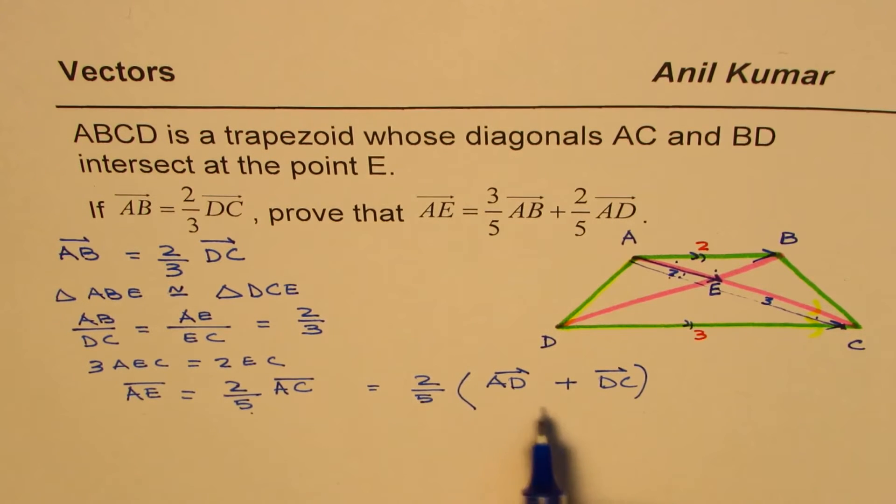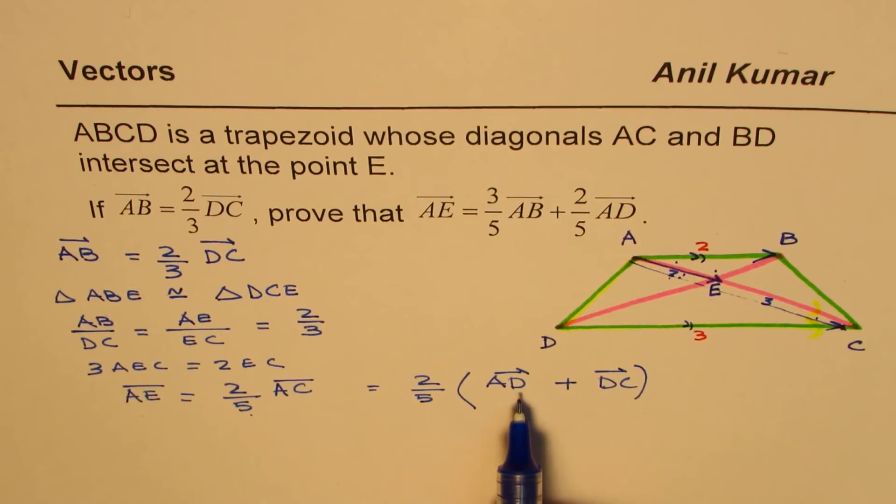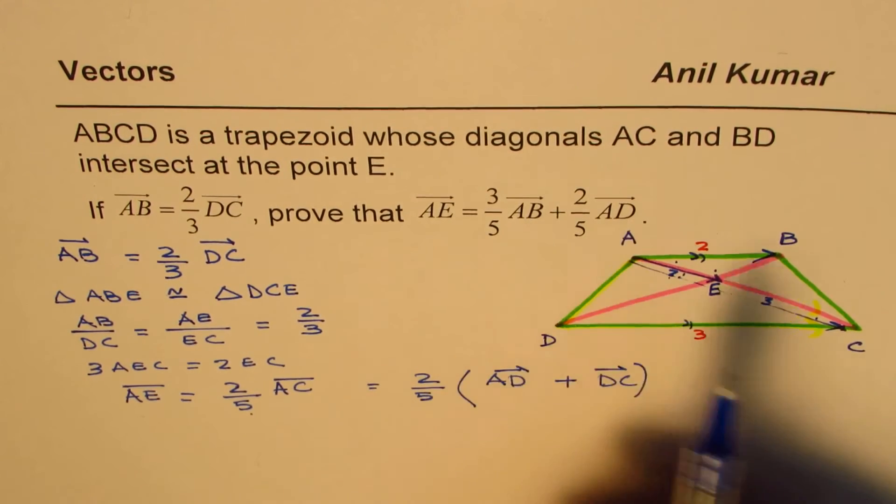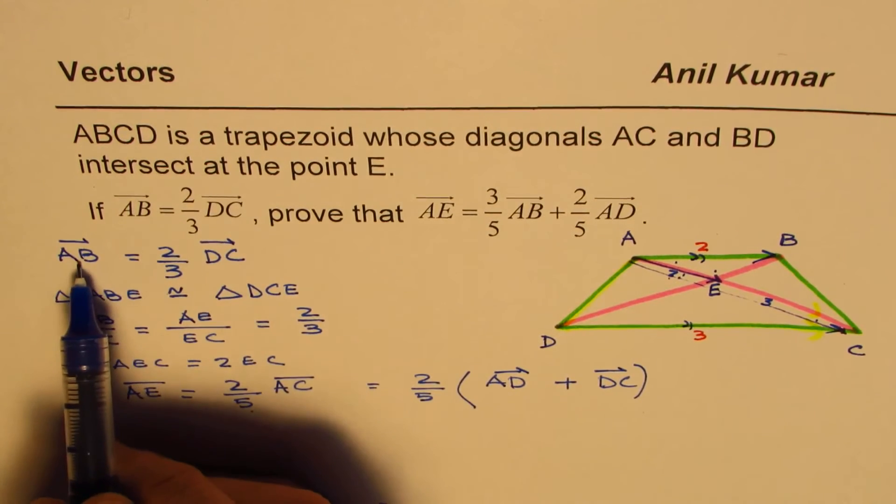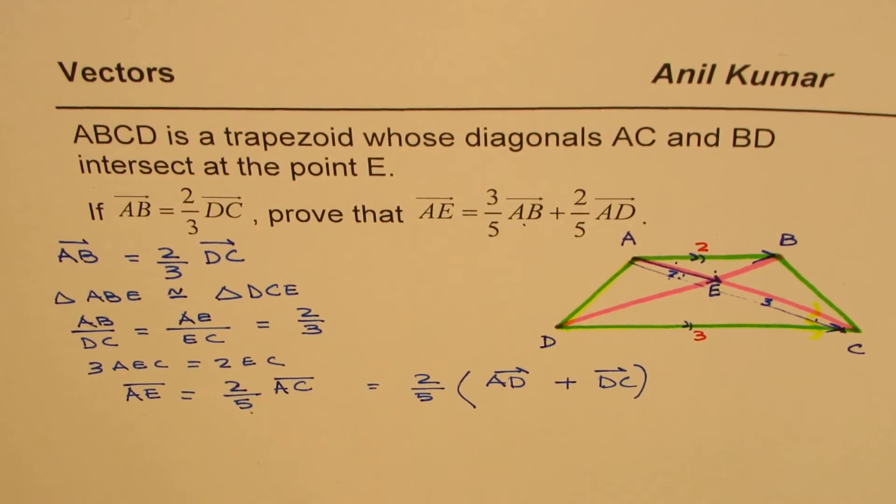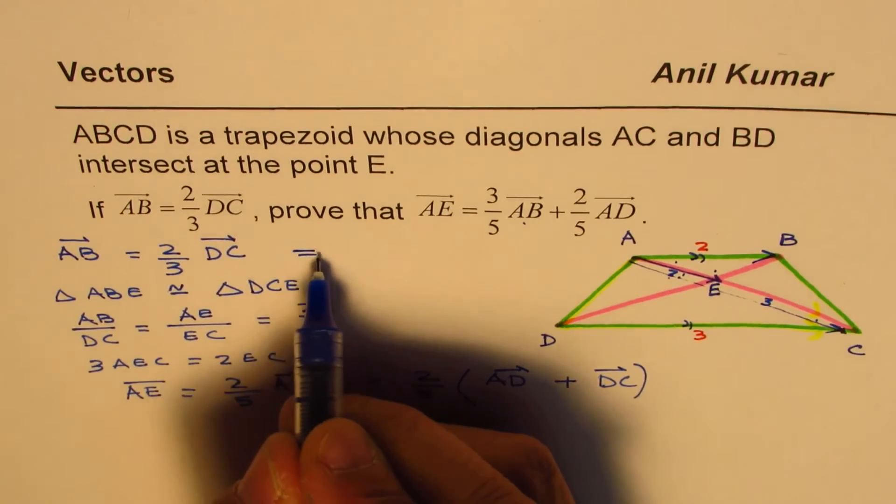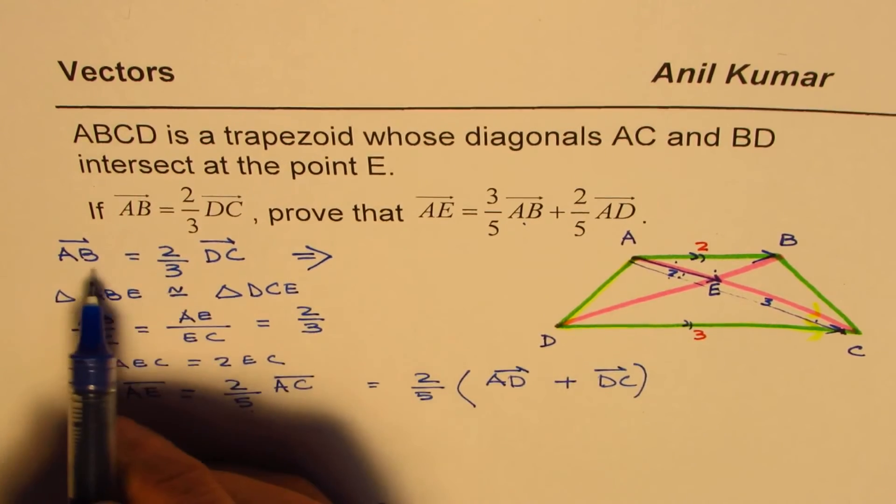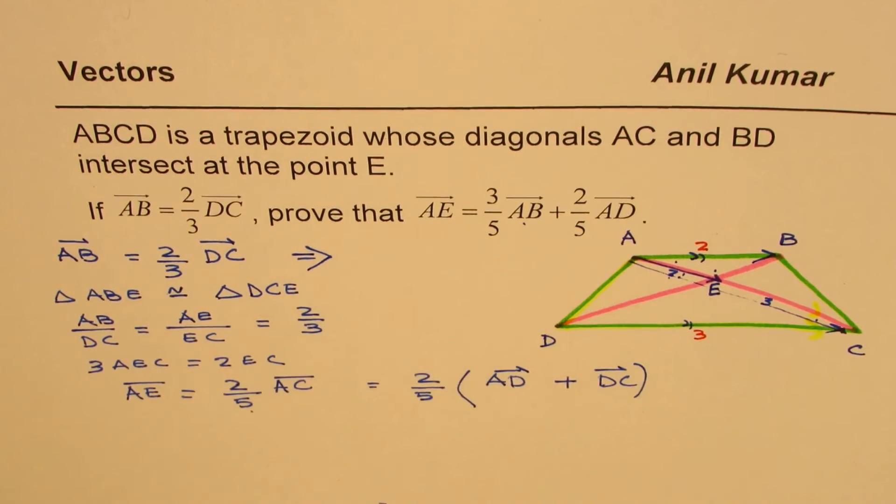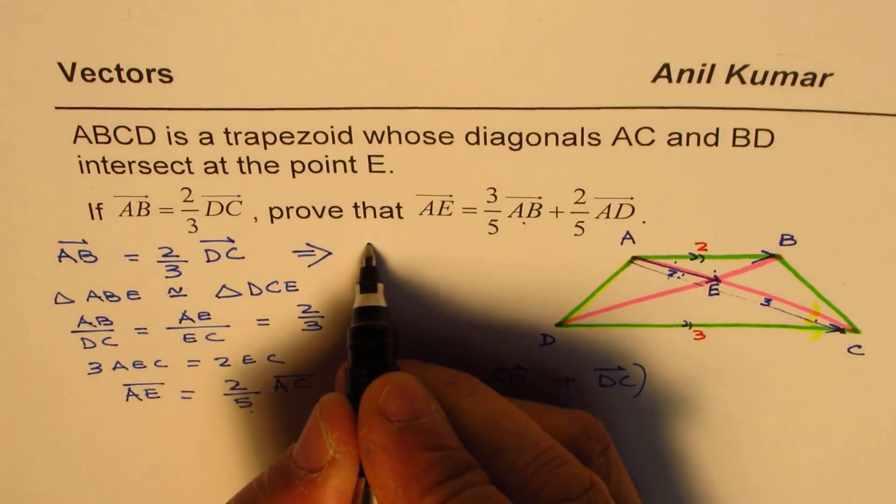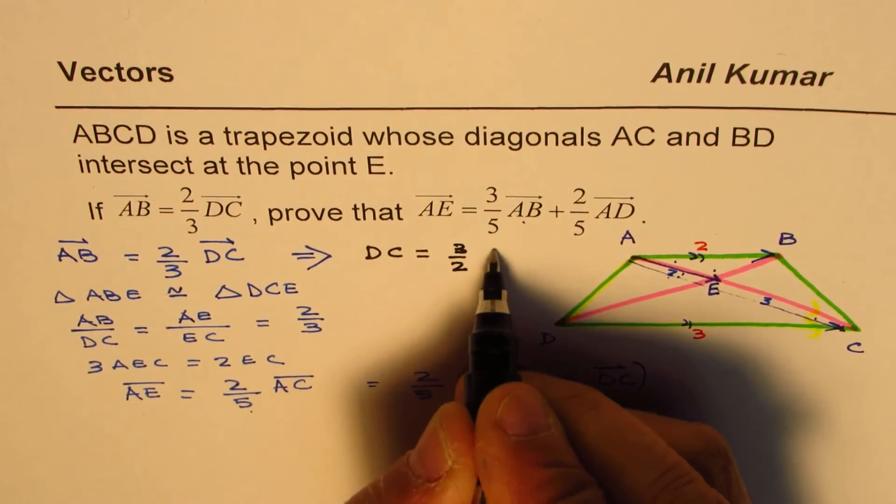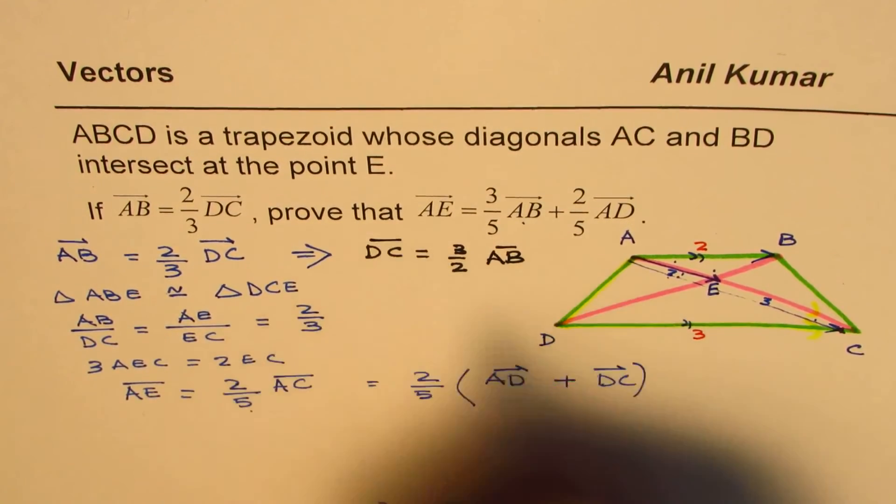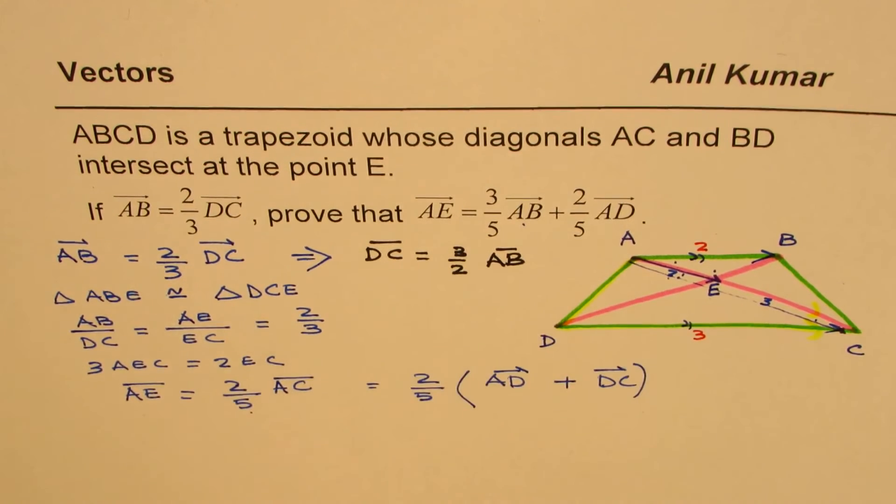Now, we know what AD is in terms of AB, this is what we need to prove. We know what AD is already there. DC, now DC could be written in terms of AB so that we get the required result. So we'll rearrange this formula here. We are saying AB is 2 third of DC, then what is DC equals to? Let's write it down. So DC from here is equals to 3 over 2 of AB.